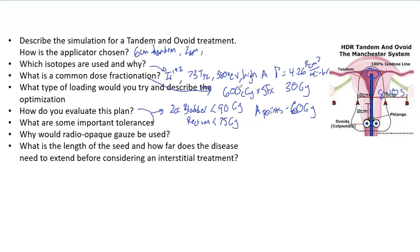Radioopaque gauze - I kind of already mentioned it pushes the organs away, keeps those applicators in place, so it helps with inverse square law and ensures things don't move. Typically they have barium sulfate in them so you can actually see the gauze in the CT scan.